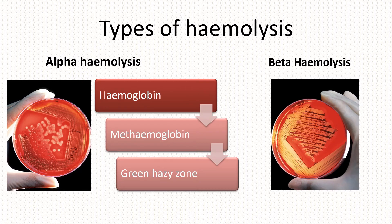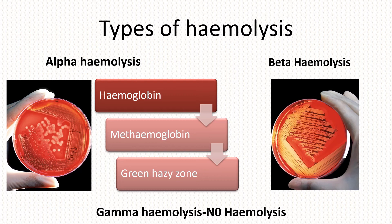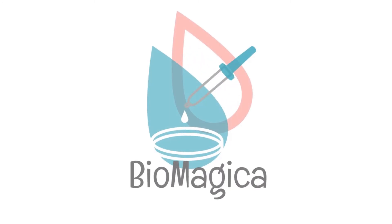We have beta hemolysis, which is complete hemolysis of the blood, giving you clear zones. And gamma hemolysis, which means no hemolysis of the blood cells.